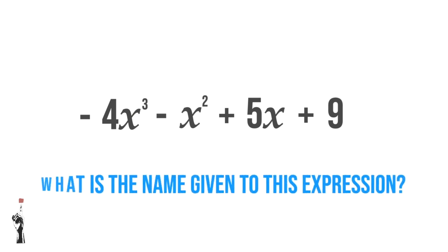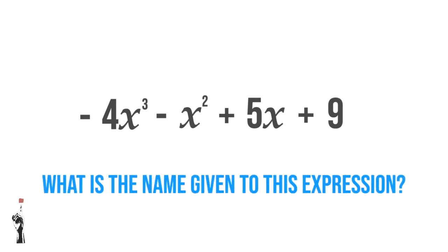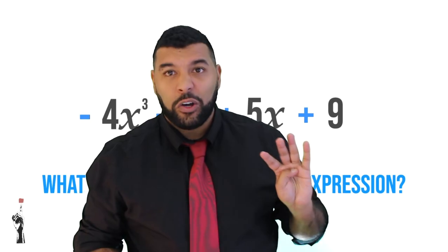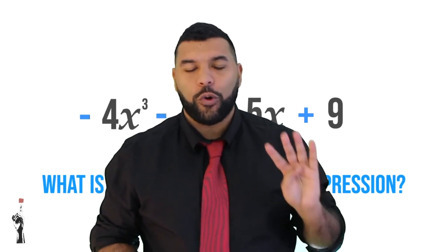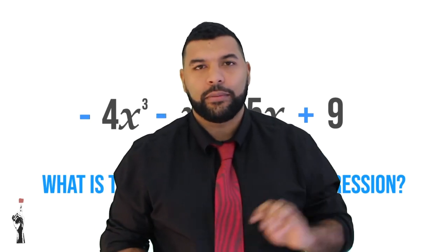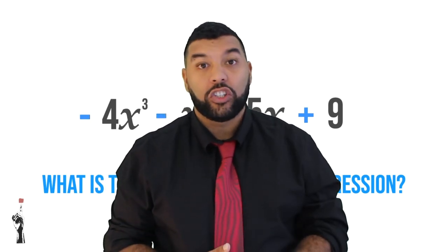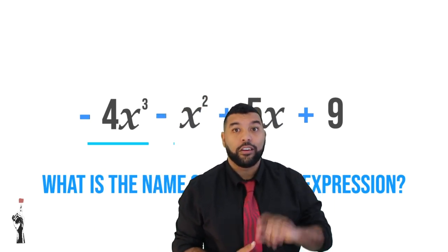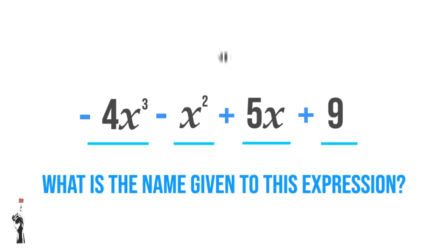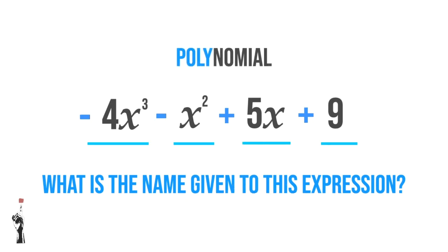What is the name given to this type of expression? Let's count the number of terms: 1, 2, 3, 4 signs that separate them, with no multiplication or division signs in between. So there are four terms, thus making it a polynomial.